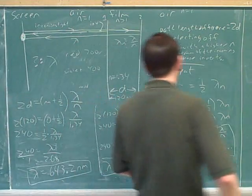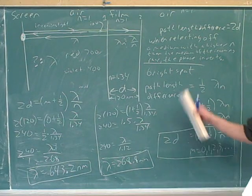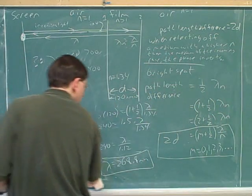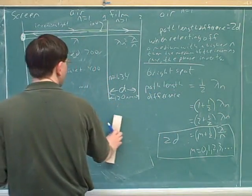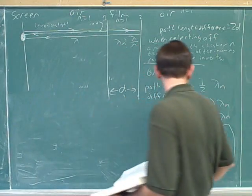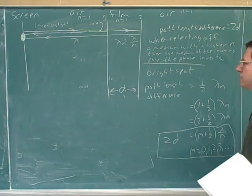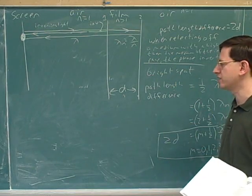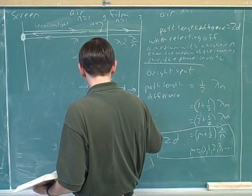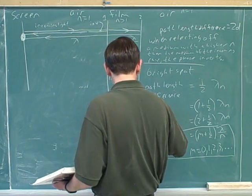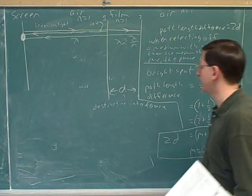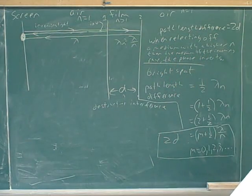Okay, so before we can move on to the next problem, remember this tells us the condition for the spots that you'll see. This is the colors you'll see, the constructive interference. But we should also ask, what's the condition going to be for destructive interference, the colors that you don't see? So let's stick with a film that's between the air and some more air. We want to know when are we going to get destructive interference.